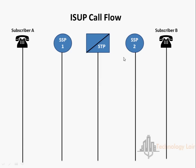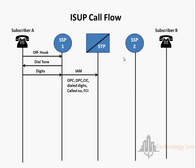So let's see what is an ISEP call flow. The calling party goes off hook on an originating switch and dials the number of the called party. A dial tone is sent to subscriber A and the dial digits are collected by SSP1. The originating SSP then transmits the ISEP IAM to reserve an idle trunk circuit.